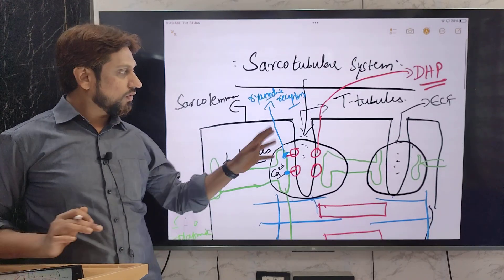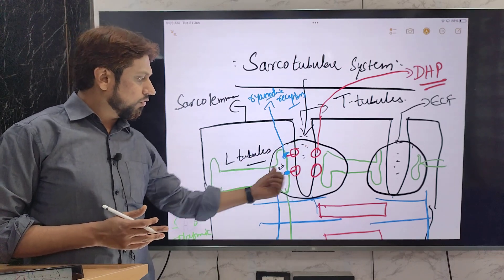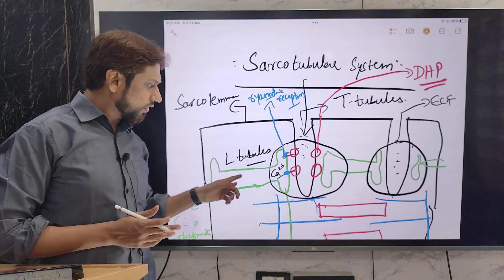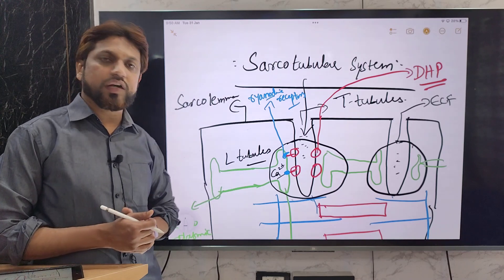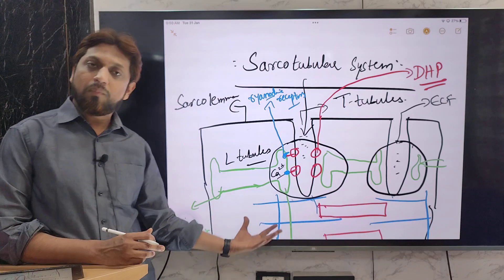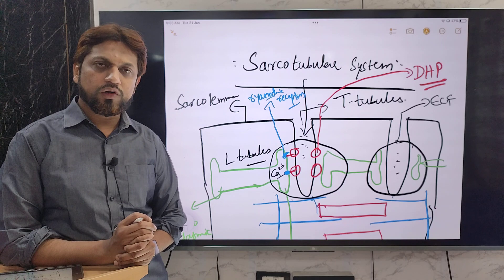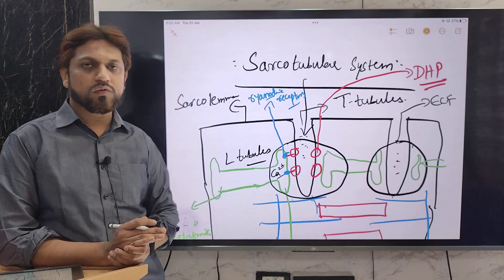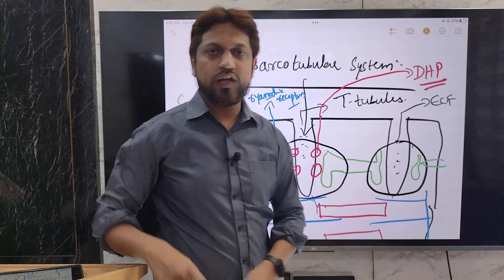To summarize: the sarcotubular system is formed by the transverse tubules and the longitudinal tubules. The transverse tubules are invaginations of the sarcolemma, and the longitudinal tubules are formed by the sarcoplasmic reticulum. Together they form a triad at the junction of the A and I band of the myofibrils. Hope this video is informative and useful. If you like this video, please subscribe and share it with your friends. We will be making similar videos from all subjects of MBBS on our channel. Thank you, take care, have a nice day.